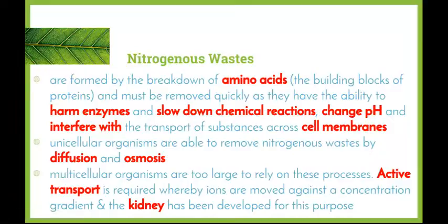Unicellular organisms - such as bacterial cells and paramecium, organisms that are only made up of one cell - are able to remove nitrogenous wastes by the simple processes of diffusion and osmosis. Obviously because they're extremely small, they've got a large surface area to volume ratio, so these substances are able to move in and out quite freely. Multicellular organisms such as ourselves are much too large to rely on these processes - we can't simply have diffusion of substances out of our body to get rid of them.